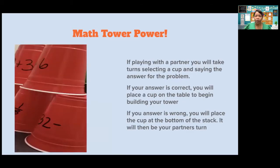If you have a partner, you and your partner will take turns selecting a cup and giving the answer for the problem that is on the cup. If you give the correct answer, you will place the cup on the table to begin building your tower. If your answer is wrong, you will place the cup at the bottom of the stack in the middle of the table, and then you will pass it to your partner because it will be their turn.